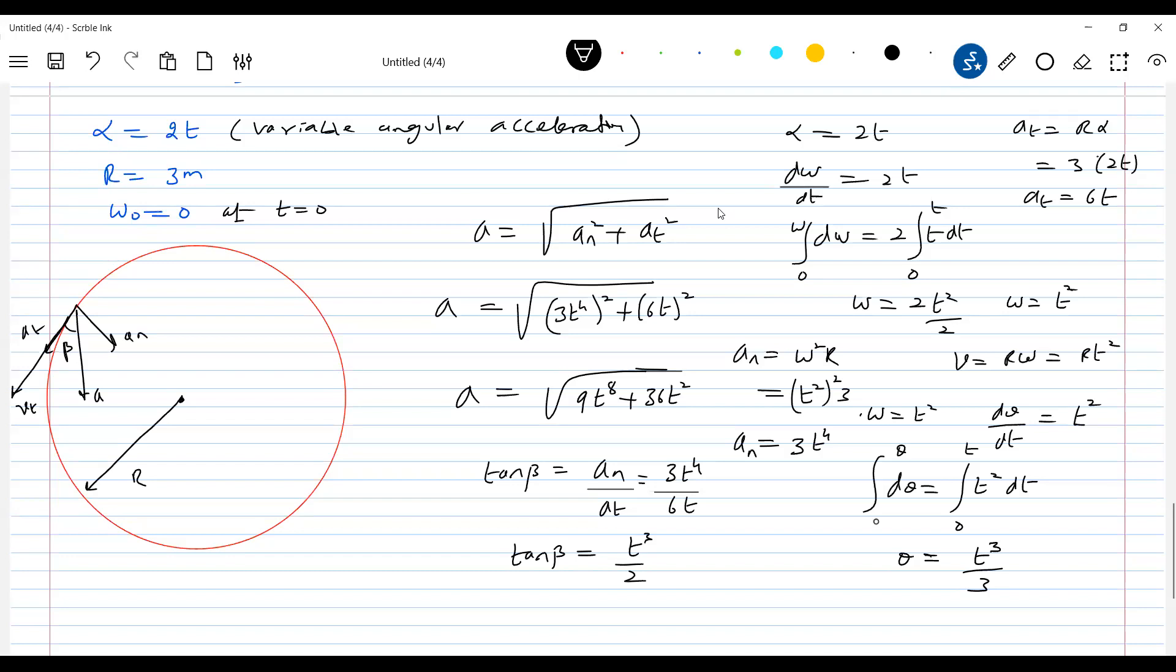So it can be constant angular acceleration or variable acceleration. So here, is it a uniform circular motion? No. What about the number of revolutions? Again, everywhere I'm stressing that number of revolutions. So θ by 2π, this will be t³ by 6π. So at any time you substitute, you'll get the number of revolutions.